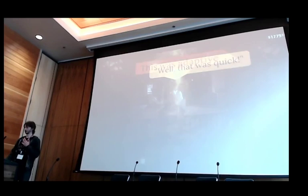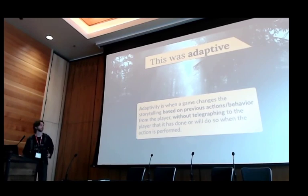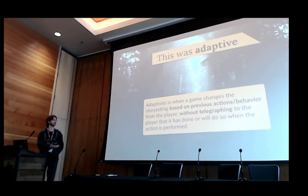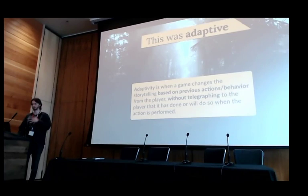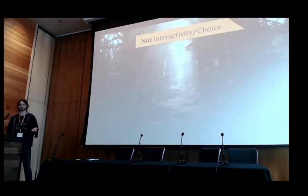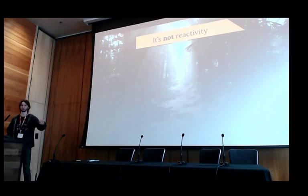This is an example of adaptivity. The game used some previous actions that I'd done and inferred the current story. This is the paper — it's changing the story based on previous actions the player did, without telegraphing to the player when they do those actions that they are recording them for a later change. They are not an interactive selective choice by the player and it is not informed to them as a choice, and it is a little more complex than reactivity, because reactivity is only when the game reacts to what the player is currently doing in the moment.